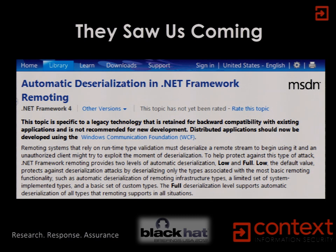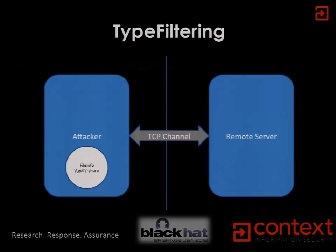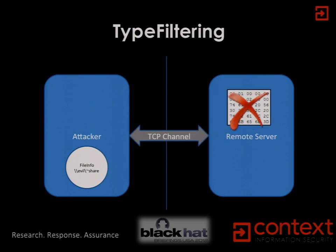But nothing is ever simple. This entire process was anticipated by the original designers of the .NET framework. There's an MSDN page basically saying that in order to validate the parameters you're passing, you must have deserialized them first — you've got a chicken-and-egg problem and could end up with automatic deserialization. As it quotes, someone 'might try to exploit the moment of deserialization,' and you can be guaranteed that's exactly what I want to try to do. So the framework implements type filtering — when I try to send my dodgy FileInfo class across the link, the remote server just says no.